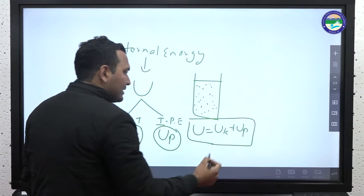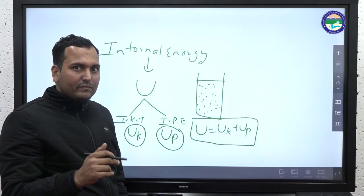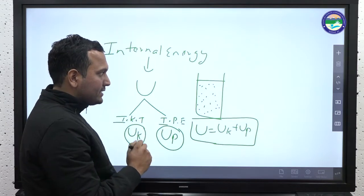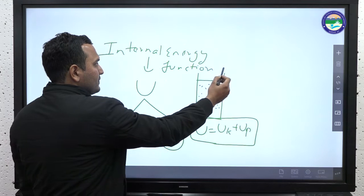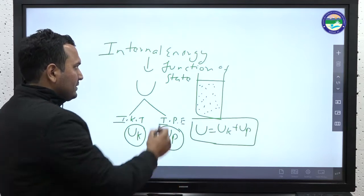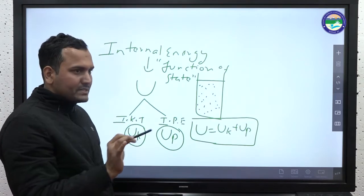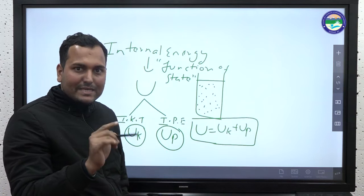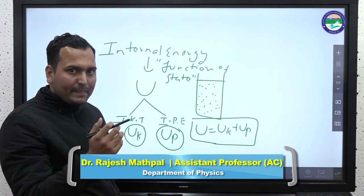The sum of internal kinetic energy and internal potential energy is called internal energy. Two things are very important about internal energy. The first concept is that internal energy is a function of state. This is the most important property of internal energy. State means — as discussed in the last lecture — liquid state, gaseous state, solid state, characterized by thermodynamic coordinates: pressure, volume, and temperature.